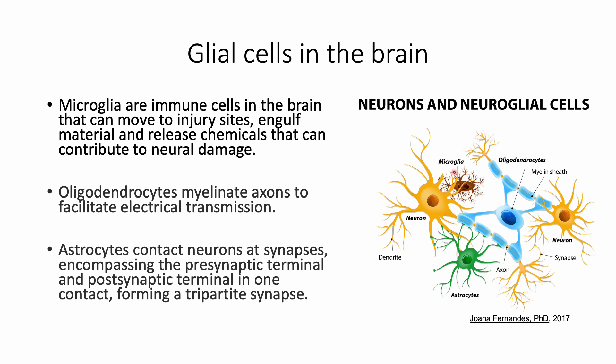Microglia are the brain's resident immune cells which engulf viruses, bacteria, and other debris. Microglia can also release chemicals that can contribute to neural damage such as oxidative stress molecules and cytokines.